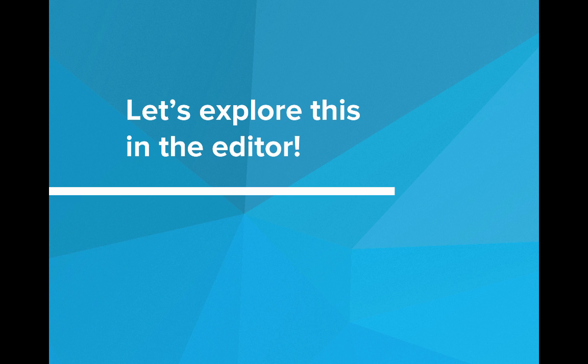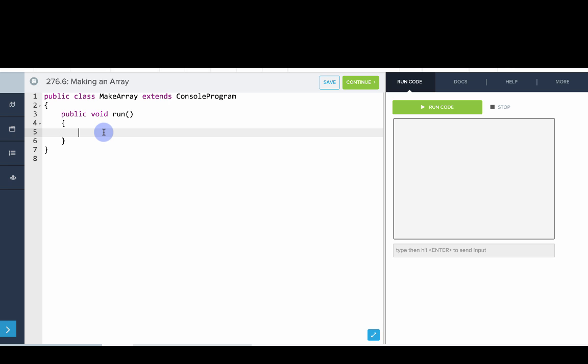So let's go explore all this in our editor. Okay, so the first thing we're going to do is make an array. So we'll say int array ar equals, and then we'll use the initializer list. We'll say 1, 1, 2, 3, 5, 8.